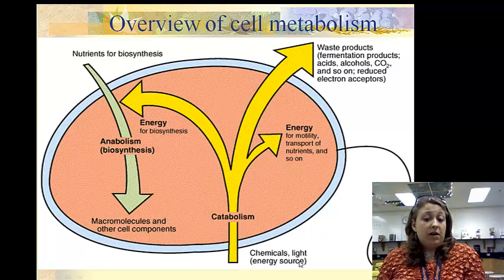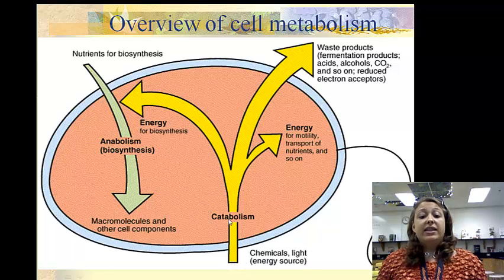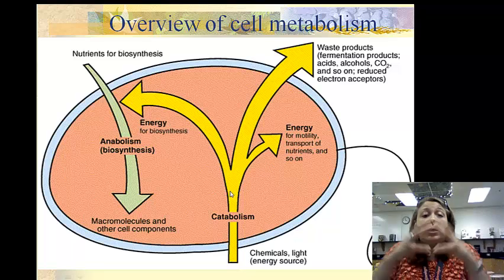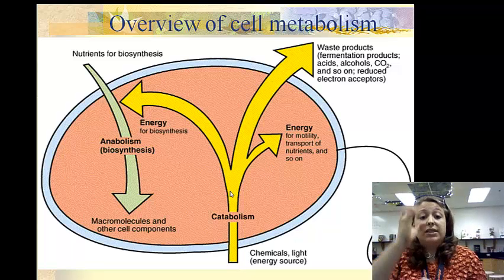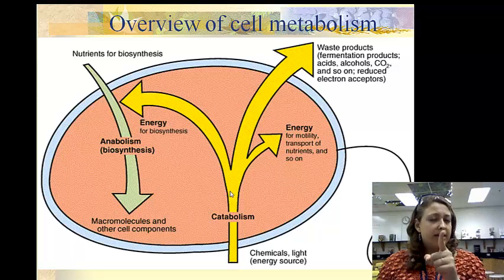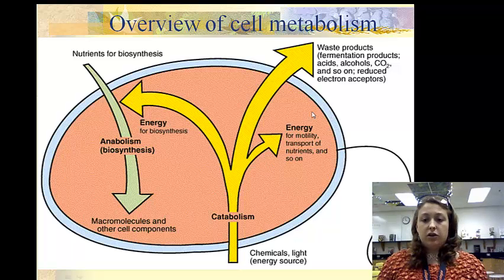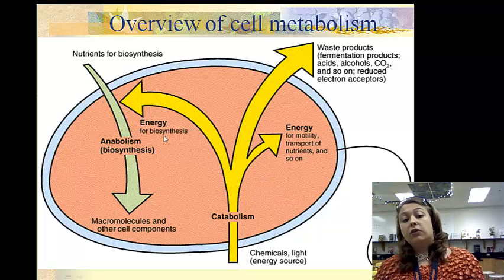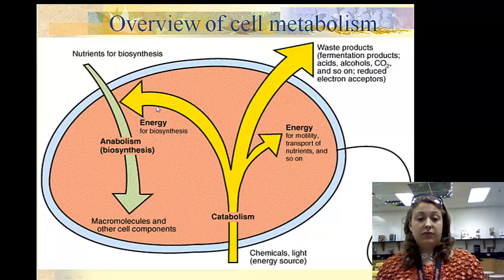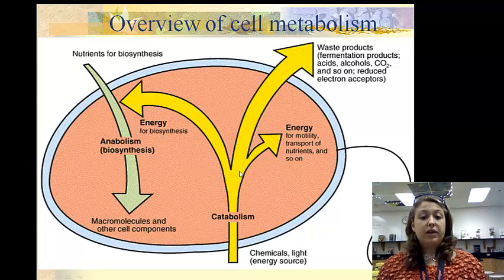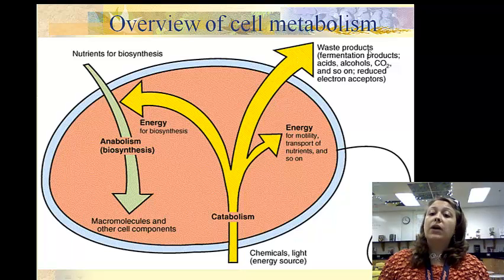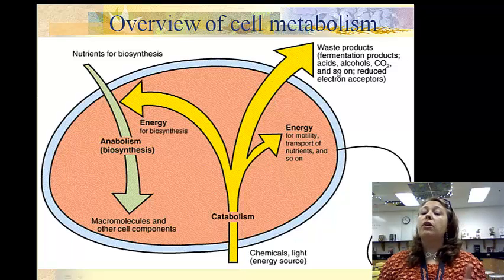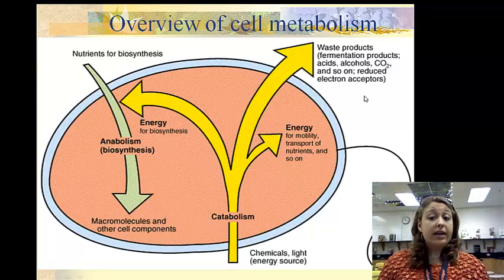Where does that energy come from? It can come from chemicals or light sources. It comes in and goes through catabolism — breaking down and releasing energy. That energy can go to motility, transportation, and nutrients; it can go to anabolism for biosynthesis to create our macromolecules; and it can also go out as waste products such as fermentation products — acids, alcohols, carbon dioxide, and others — or as reduced electron acceptors.